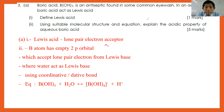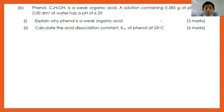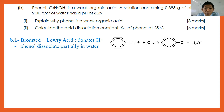Continuing with part 3B: phenol C6H5OH is a weak organic acid. A solution containing 0.385 g of phenol in 2.00 dm³ of water has a pH of 6.29. All values are given to three significant figures, so the final answer should also be in three significant figures. Number one: explain why phenol is a weak organic acid. A Brønsted–Lowry acid is a proton donor. Phenol dissociates only partially in water according to the equation, which explains why phenol is a weak acid.